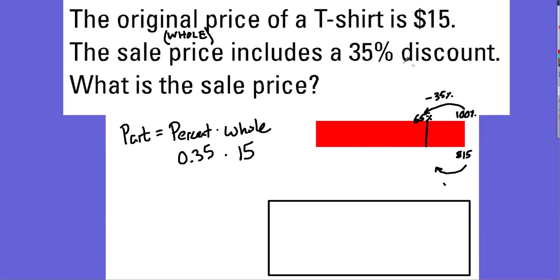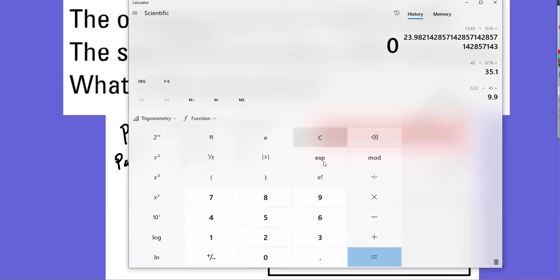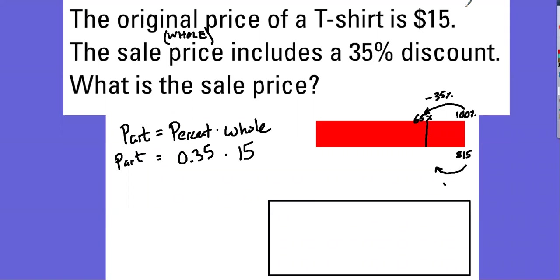Just make sure that we understand that when we work with this number, that's going to tell us the amount of the discount. It's not going to be our final answer because our final answer wants to know sale price. So I have 35% of 15. Let's type that in. 35% times 15 is $5.25.